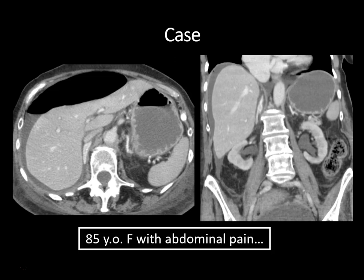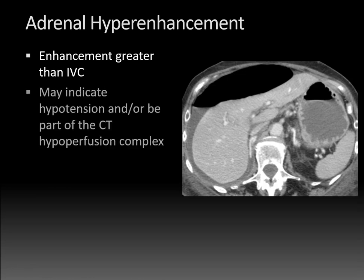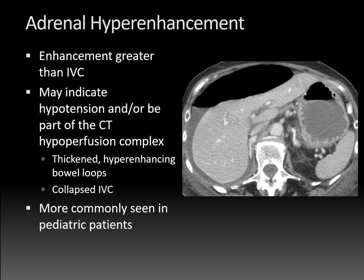Looking at another case of an elderly patient with abdominal pain: the adrenal glands have normal configuration, but they seem very bright — hyper-enhancing — especially compared to the inferior vena cava denoted by the orange arrow. Adrenal hyperenhancement is denoted when there is enhancement greater than the inferior vena cava. Normally the adrenal glands enhance to 50 to 60 Hounsfield units, but this is much greater. That raises suspicion for hypotension and may be part of the CT hypoperfusion complex, where you can get thickened hyper-enhancing bowel loops, the so-called shock bowel, and collapsed inferior vena cava. These findings are more commonly seen in pediatric patients in the setting of shock, sepsis, and trauma.